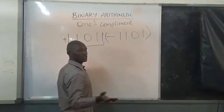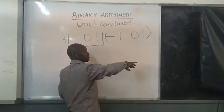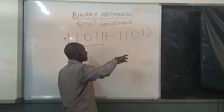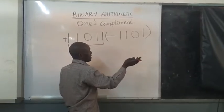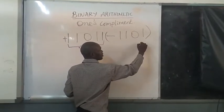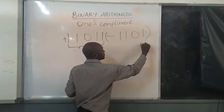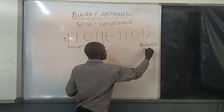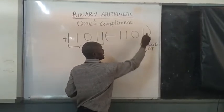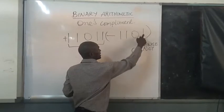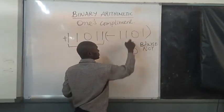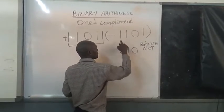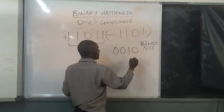Bitwise NOT means we change — if it is a bit one, we change it to zero; if it's a bit zero, we change it to one. So our value here, the bitwise NOT, is going to be zero, then one, then zero, then zero.